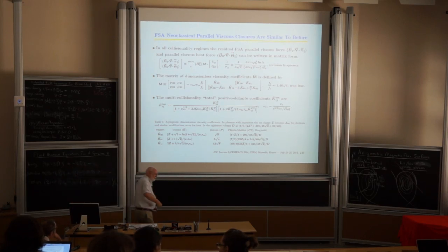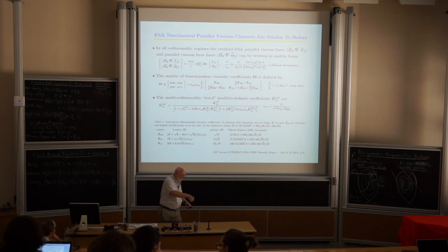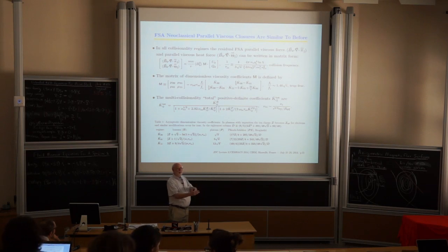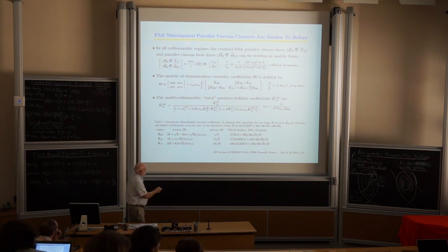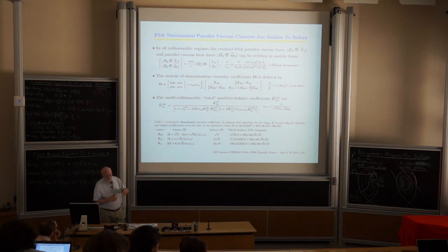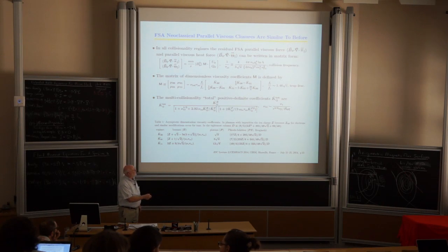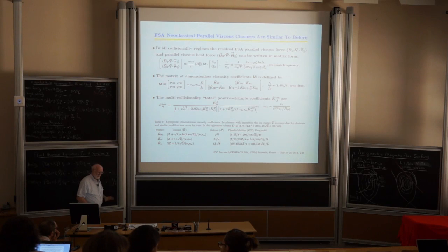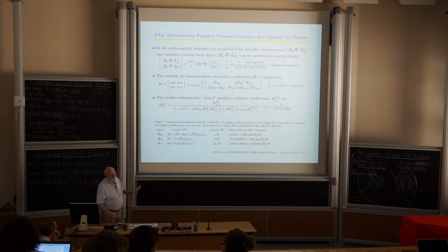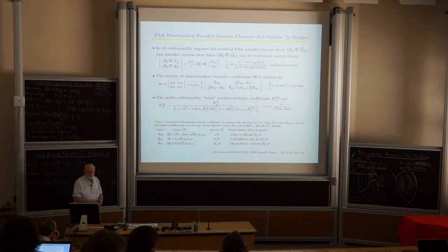If particles aren't quite collisionless enough to complete the banana orbit, they get collisions halfway through — that's the plateau regime. And then there's the short collision length Braginskii regime. These coefficients vary as a function of collisionality. In ITER-like experiments, they'll mostly be in the banana regime.